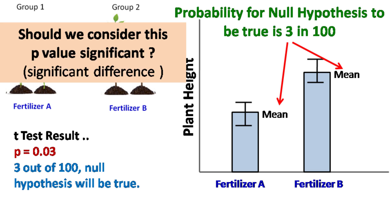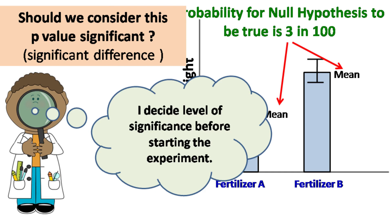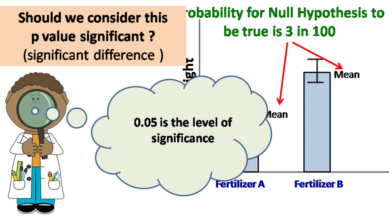The next question is: should we consider this significant or not? Taking a decision based on p-value is completely in the hands of the experimenter or the scientist doing the experiment. The researcher decides the level of significance for their experiment. Let's say the level of significance decided by the researcher was 0.05.